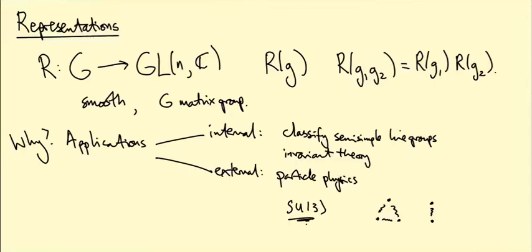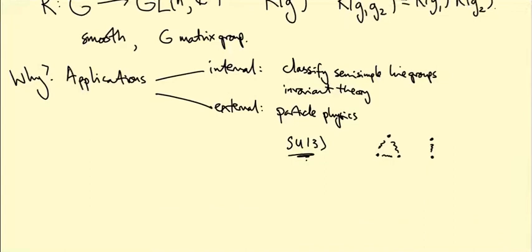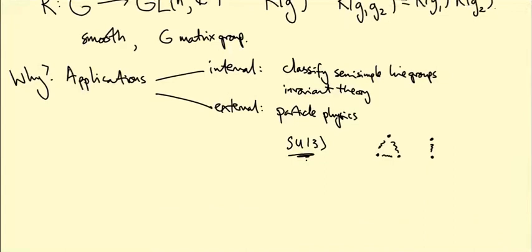So I just want to recap the punchline of the first half of the course, which will be one of the main tools we use to study representations of Lie groups. Namely, that given a representation R: G → GL(N,C), we get a Lie algebra representation.